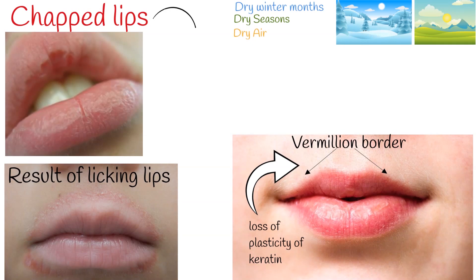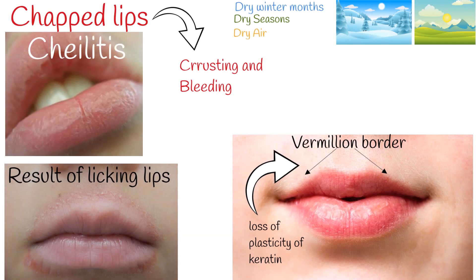The lower lip usually becomes inflamed, and chronic chapped lips can progress to crusting and bleeding. Generally, inflammation of lips is called cheilitis. The therapeutic management of cheilitis is symptomatic and etiological.